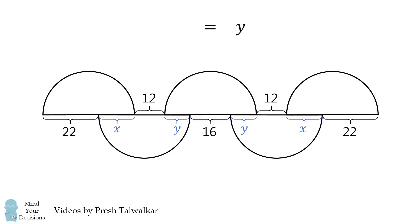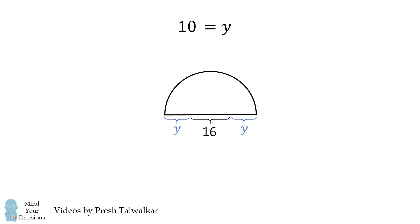We then cancel out the x terms and then simplify this equation. We end up that y is equal to 10. We then focus on the central semicircle and then substitute in for y and then we get 10 plus 16 plus 10 which gives us our answer that the diameter is equal to 36.